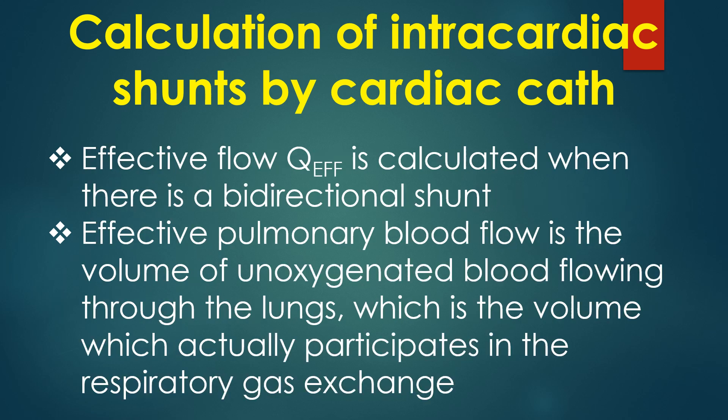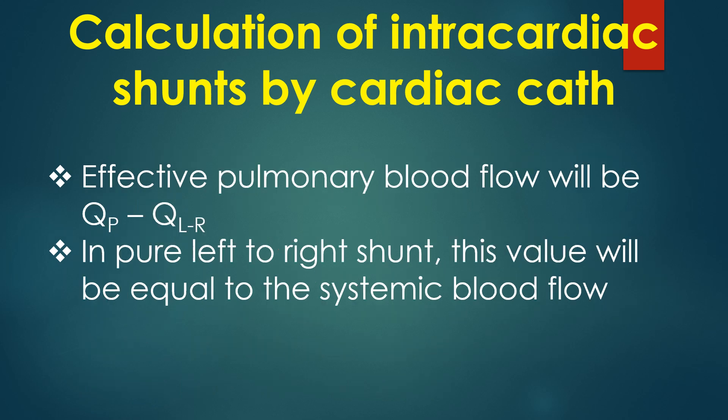Effective blood flow is calculated when there is a bidirectional shunt. Effective pulmonary blood flow is the volume of unoxygenated blood flowing through the lungs — the volume which actually participates in respiratory gas exchange. Effective pulmonary blood flow will be QP minus Q left-to-right. In a pure left-to-right shunt, this value will be equal to the systemic blood flow.